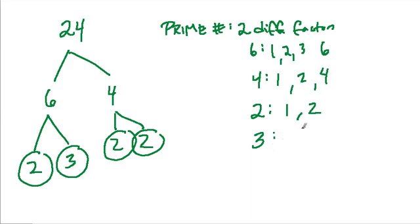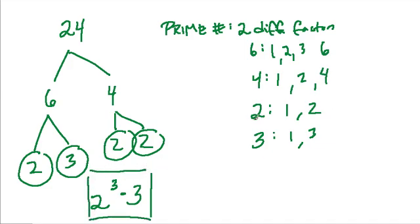What are the only factors of 3? The only whole number factors are 1 and 3, so that's prime. So we have our prime numbers here, and 24 equals 2 to the third power times 3, and that's the prime factorization of that number.